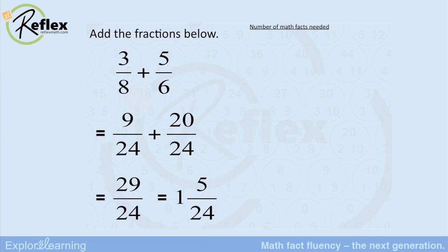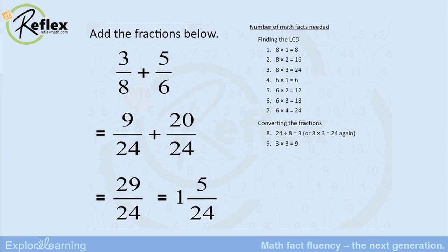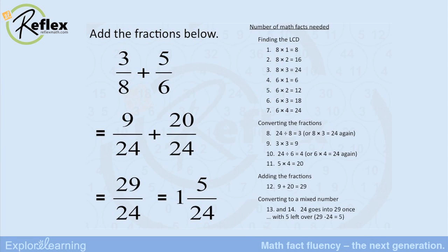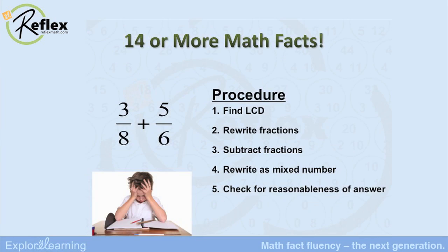Now let's come back and look at how math facts fit into that. We had the little procedure for finding the lowest common denominator. At bare minimum: three facts to get to eight-times-three and four facts to get to six-times-four. Then we had to convert the fractions — we had to know that eight goes into 24 three times, multiply it out, same thing on the other side. Then we add the fractions, then convert to a mixed number. Leaving aside the fact that the kid has to know that 24 goes into 29 once — that's 14 or more math facts just to add two fractions with unlike denominators.